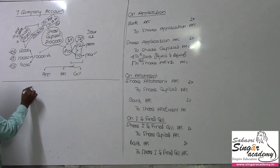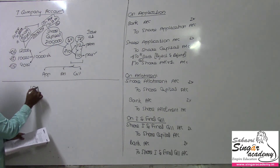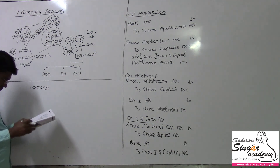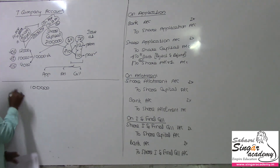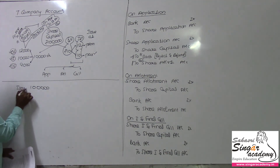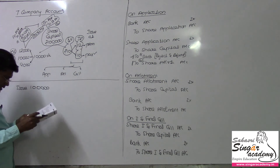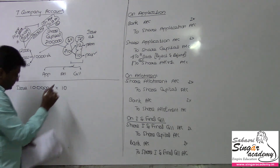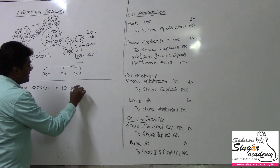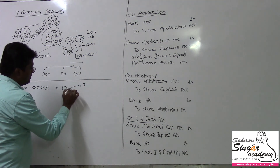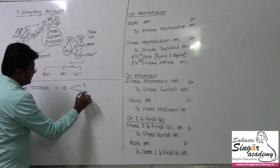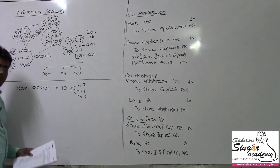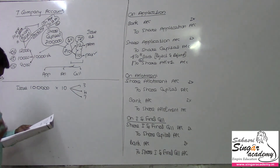So 1 lakh shares are being issued at a rate of 10 rupees — 3 rupees on application, 4 rupees on allotment, and the balance. This is the issue structure.